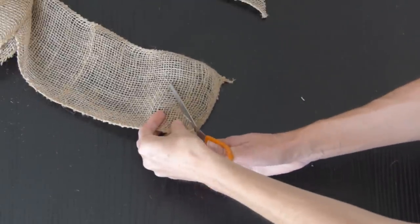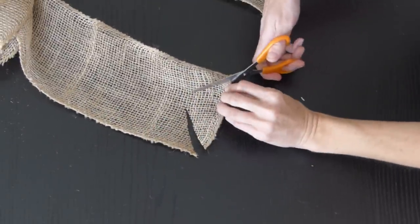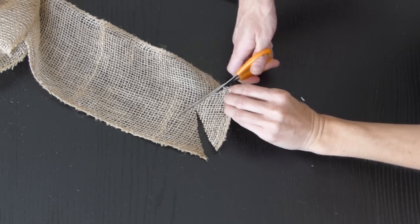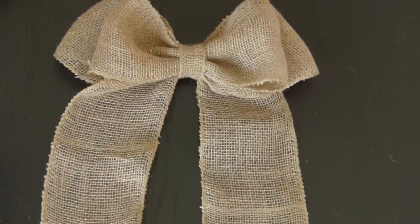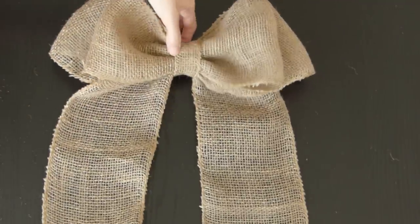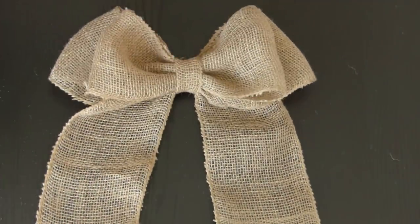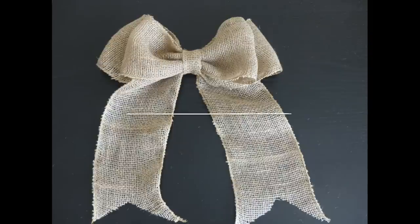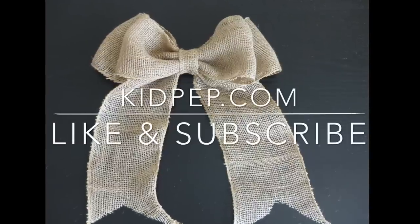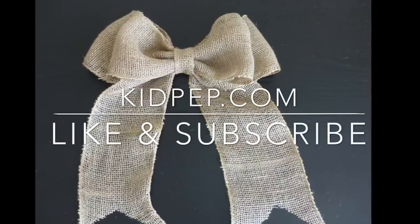Cut out little V shapes. There you have it, your easy burlap ribbon bow. Please be sure to visit kidpep.com and like and subscribe for more DIY videos. Have a great day.